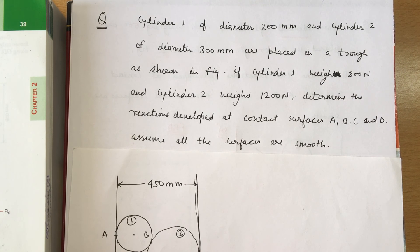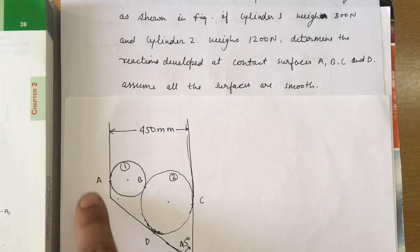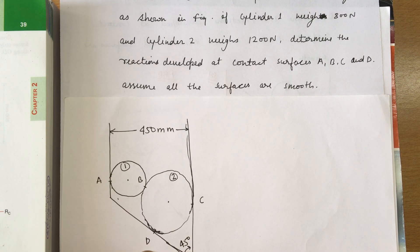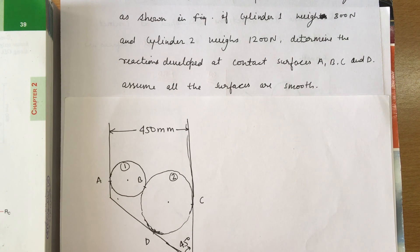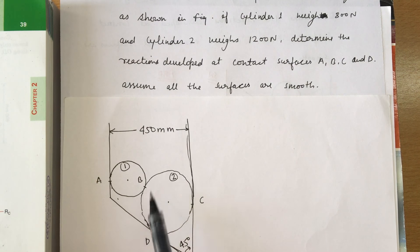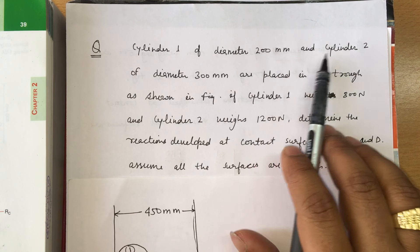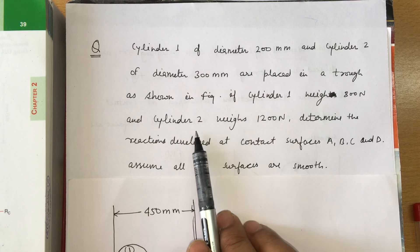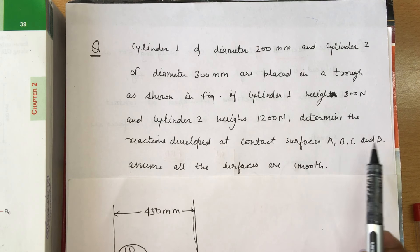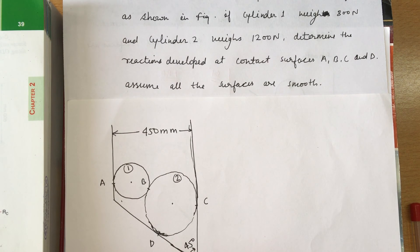In this video, we are going to discuss an example related to a system of concurrent coplanar forces. We have two cylinders inserted in a trench. Cylinder 1 has a diameter of 200 mm and weighs 800 N; cylinder 2 has a diameter of 300 mm and weighs 1200 N. We need to determine the reactions developed at contact surfaces A, B, C, and D. Assume all surfaces are smooth.